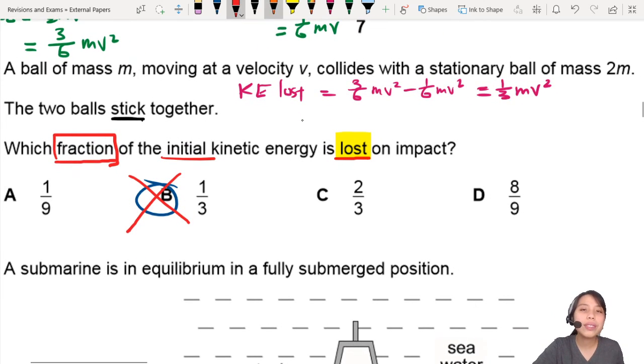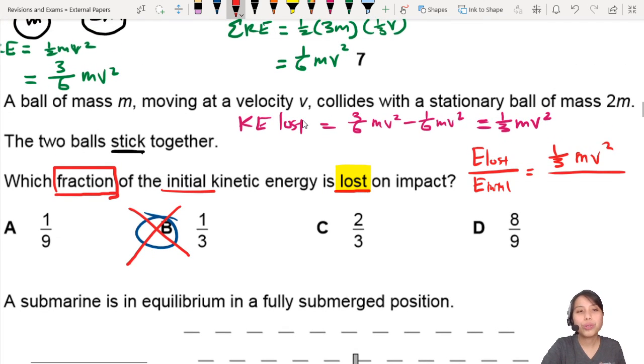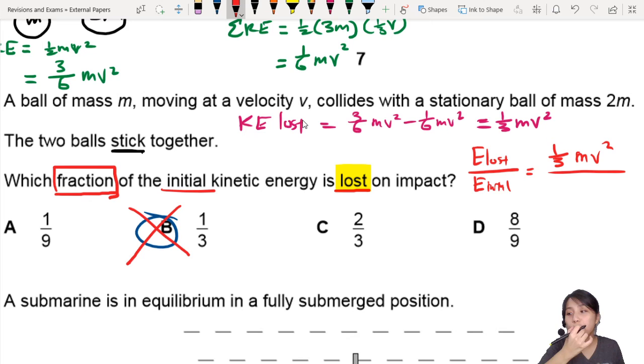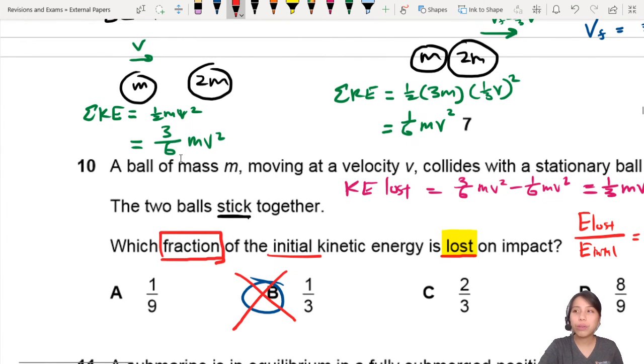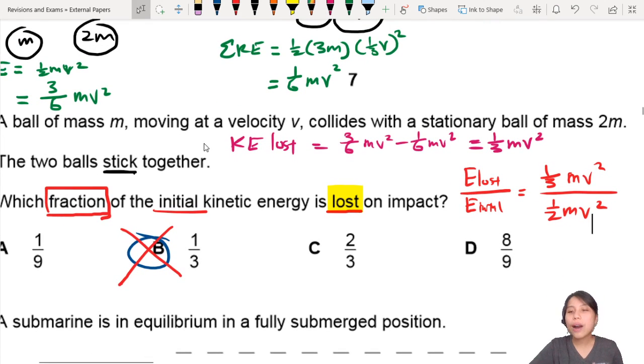So the final step, therefore, is to say, I want the energy lost over the initial energy. So we lost 1 over 3 MV squared. What's the initial energy? 1 over 2 MV squared is your initial energy, from the diagram up here on the left side. This is our 1 over 2 MV squared. Top left. So now, we finally get to the answer. The MV squared and MV squared cancel out. So all that is left is 2 over 3.